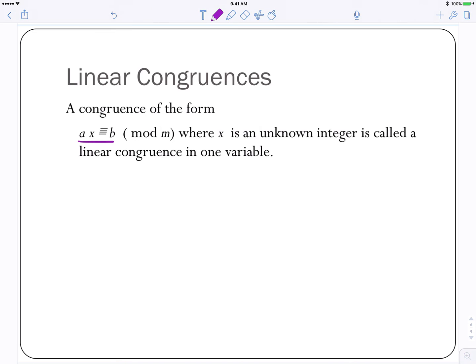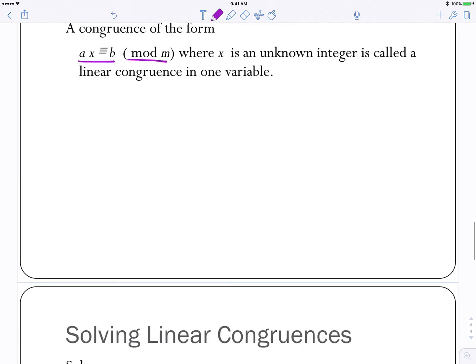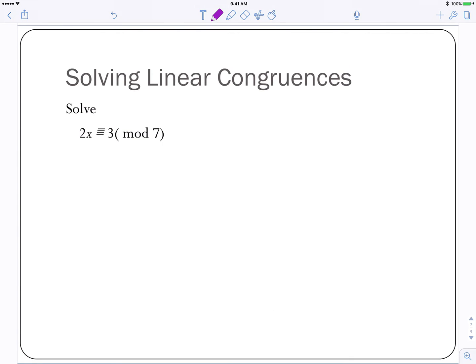So a linear congruence is a congruence of the form AX plus B mod M, where X is our unknown integer variable. And this is an example of a congruence in one variable because there's only one variable there, X. So now, how do we solve this linear congruence, 2X congruent to 3 mod 7? If it was an equation, 2X equals 3, then you would tell me, I hope, divide both sides by 2 and X equals 3 halves. That is absolutely true, but not at all relevant for this particular problem. Why is that? Because we can't divide both sides of the congruence by the same value. That wasn't part of the theorem.